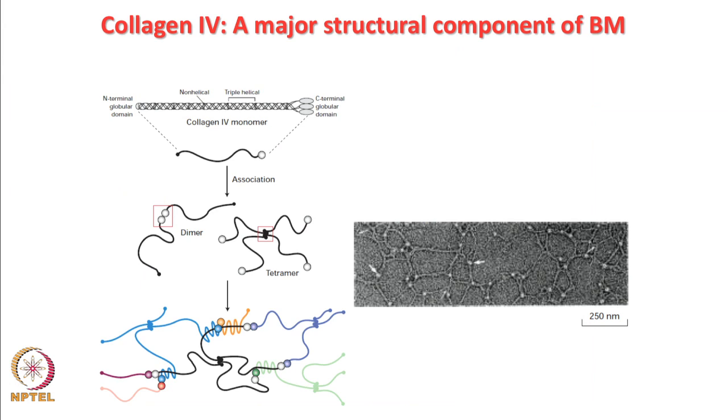Apart from fibrillar collagens, collagen 4 is the main structural component of the basement membrane, forming tetramer units that come together in a mesh-like structure stabilized by other molecules. Today I gave you a gist of how extracellular matrices regulate cell behavior. In the next class we will look at how matrix properties are dictated by ECM protein density and organization, and how matrices exhibit non-linear elasticity under applied forces.